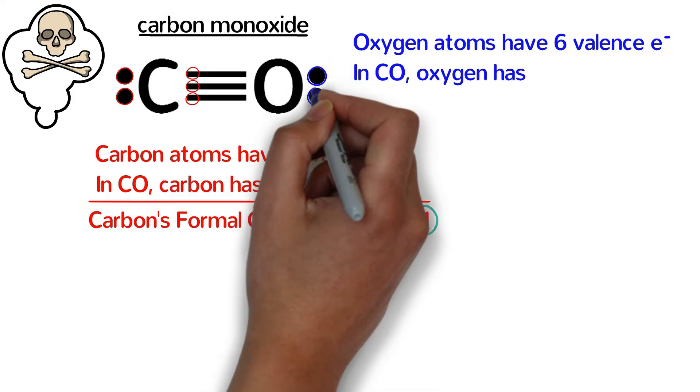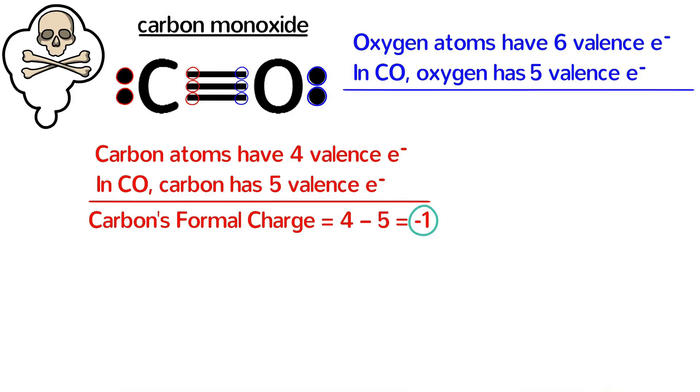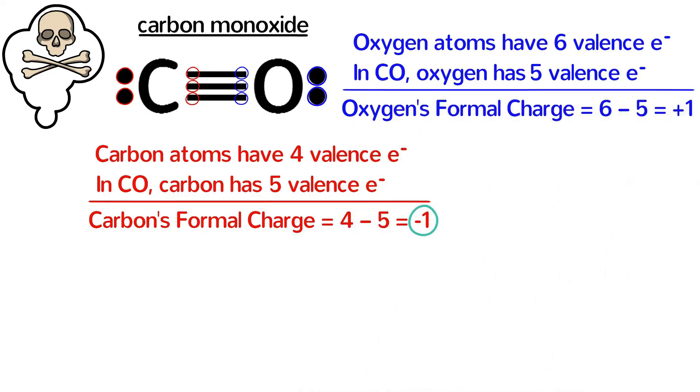We can do the same thing for oxygen, which has six valence electrons as an atom. In carbon monoxide, however, it has one, two, three, four, five valence electrons. So oxygen's formal charge is six minus five, which is positive one.